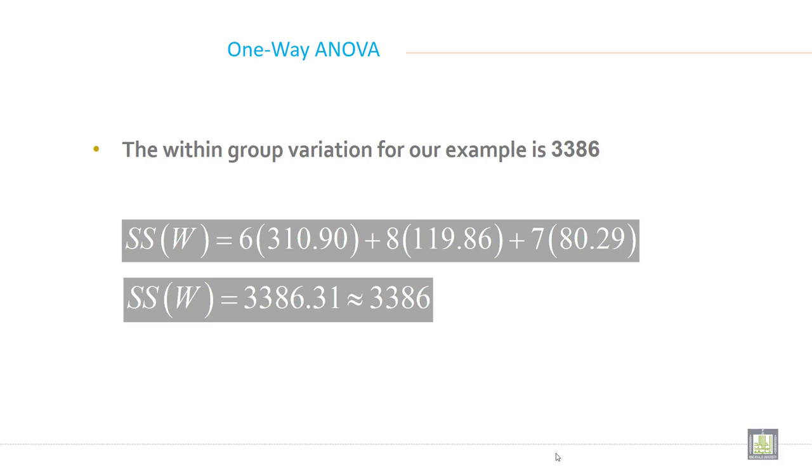The within group variation for our example is 3386. So how can you calculate 3386? This is your first value, second value, front seater, middle seater, and back seater. This is the difference between group mean and grand mean. So now you can calculate this. You will get 3386.31, and when you round this figure, it will come to 3386.